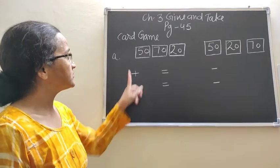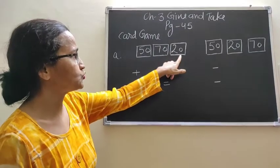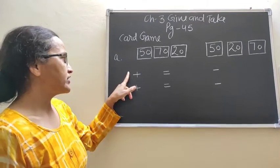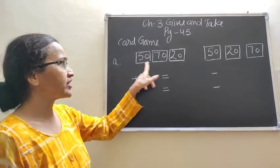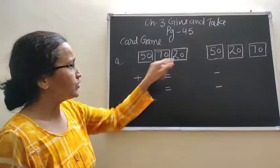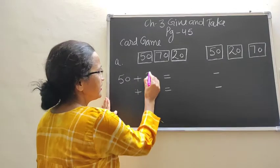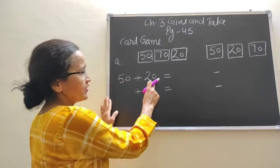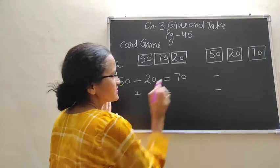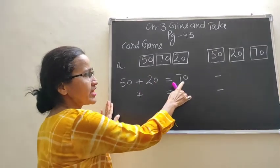Now here are three cards: 50, 70, and 20. This is a sign of addition. In addition, you have to take the smaller numbers. The smaller numbers are 50 and 20. So right here: 50 and 20. The remaining number is 70, so right here: 70. Now add 50 plus 20, then we get 70.